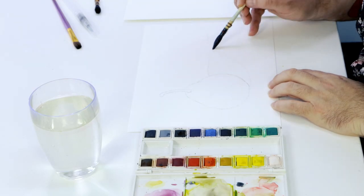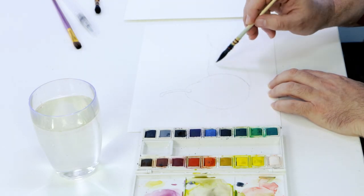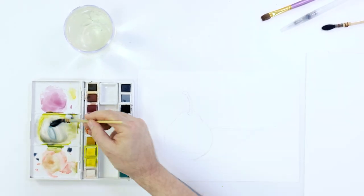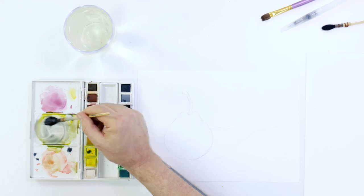After we have drawn up the outline of the pear, lay in some clean water over the shadow area and then create a mix from dark blue and black and paint it into the shadow area.